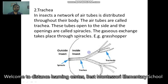The next organ is the trachea. Most insects respire through trachea. There are air tubes present throughout their whole body — these tubes are called trachea. They are open, and these openings are called spiracles. The exchange of gases takes place through these spiracles.